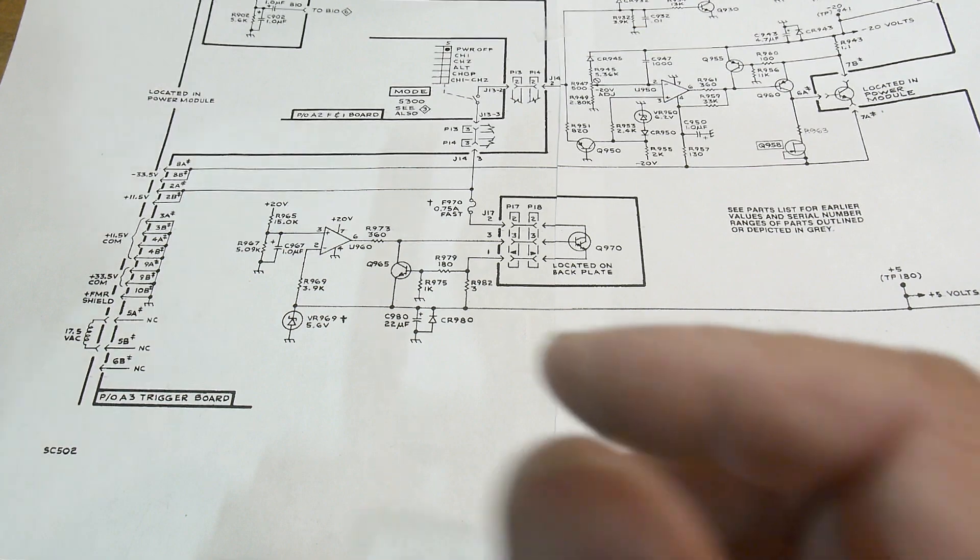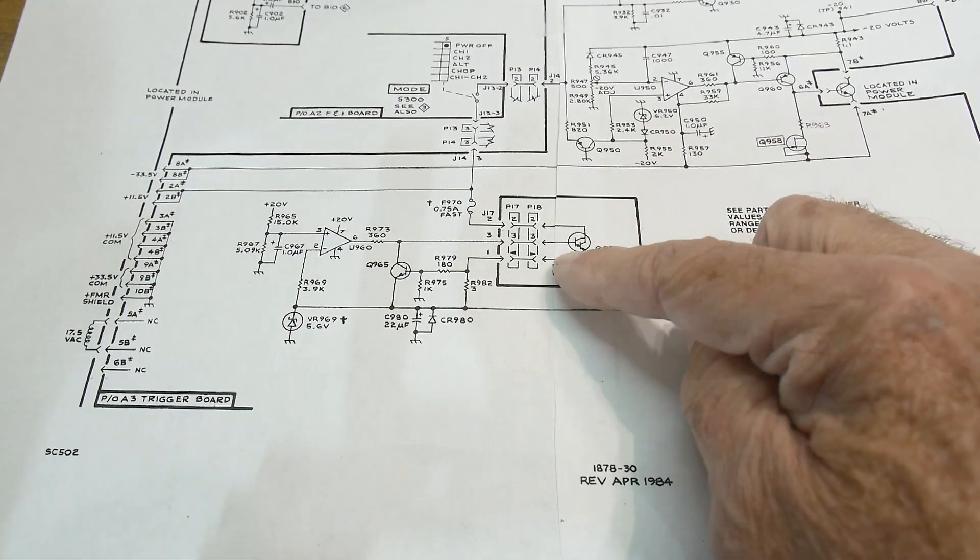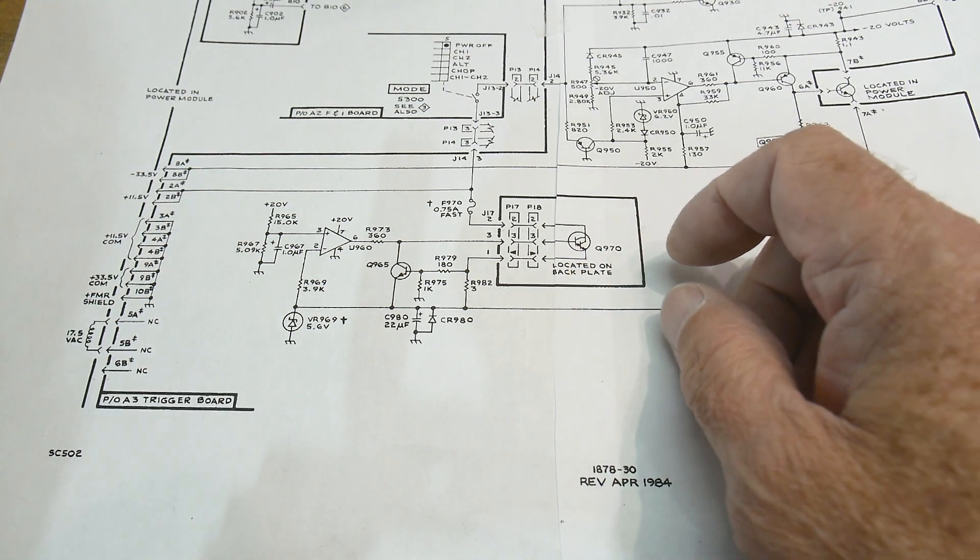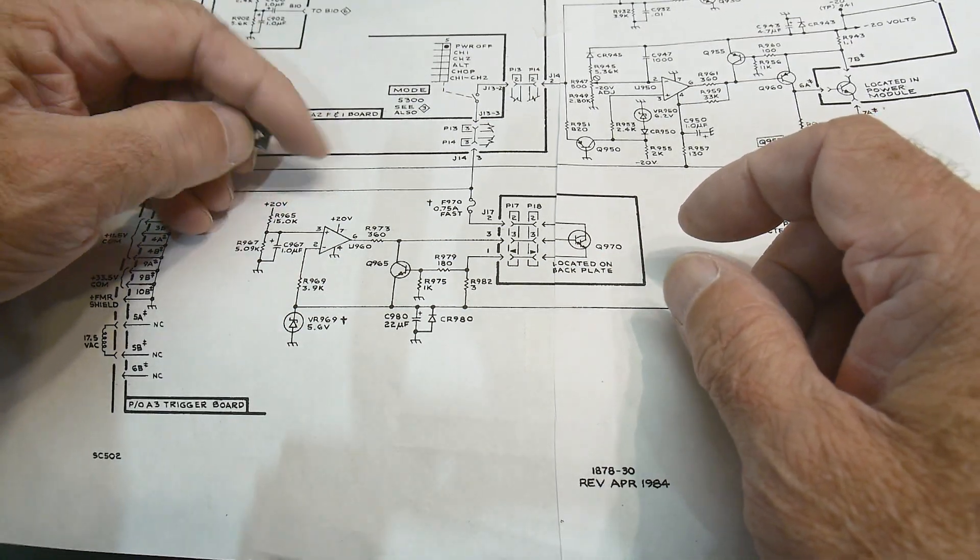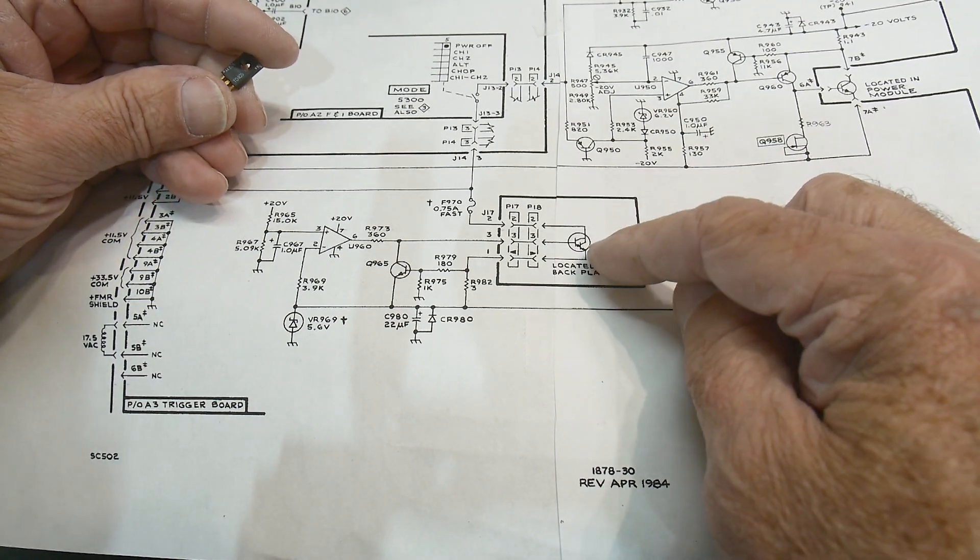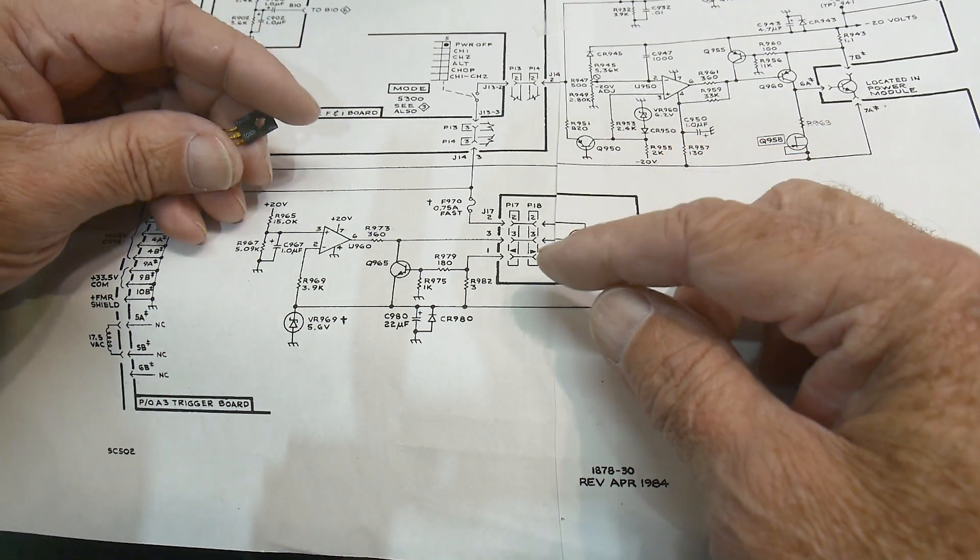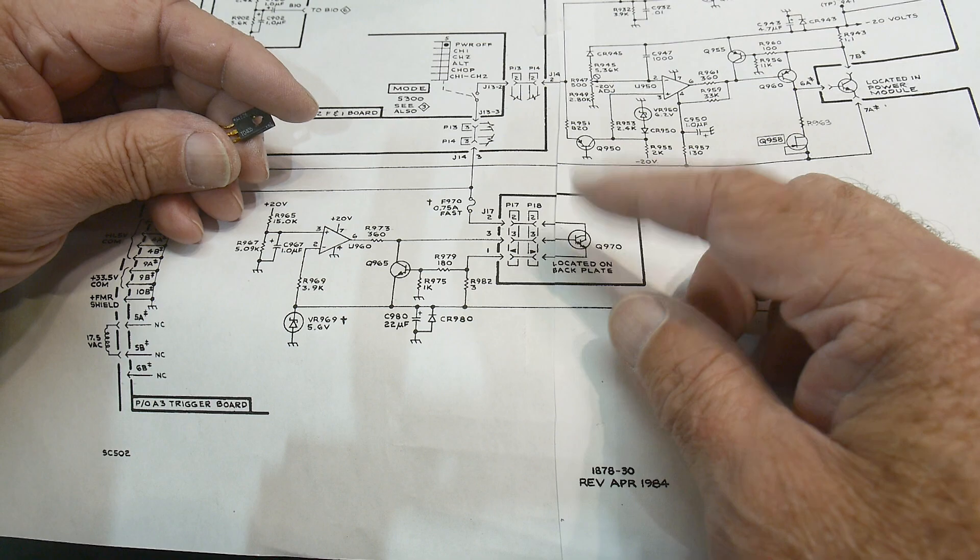Anyway, after searching around, this Q970 is drawn as a Darlington, and what was in there was not a Darlington. It had a pretty low HFE. I looked this part up in the manual, and it's a weird Motorola part. No datasheet to be found. Nowhere on the internet can I find any information on it.